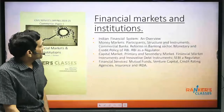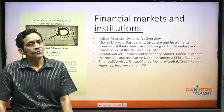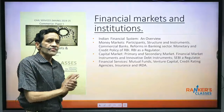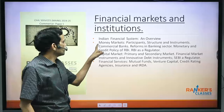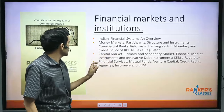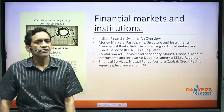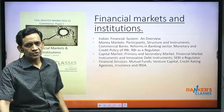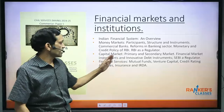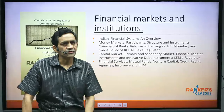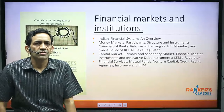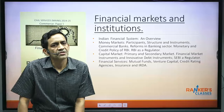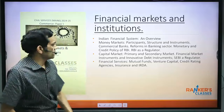Financial Markets and Institutions covers what is typically studied at graduation level. There are mainly three chapters: Money Market (RBI and money market institutions), Capital Market, and Financial Services (mutual funds, insurance, IRDA, etc.). Around 30–40 marks of questions come from this section.